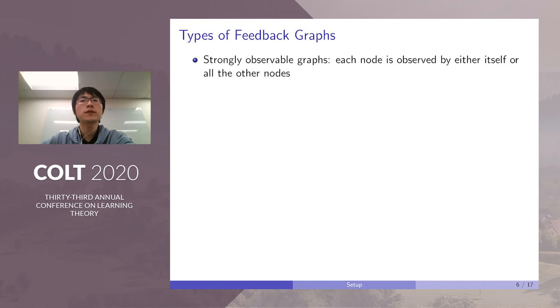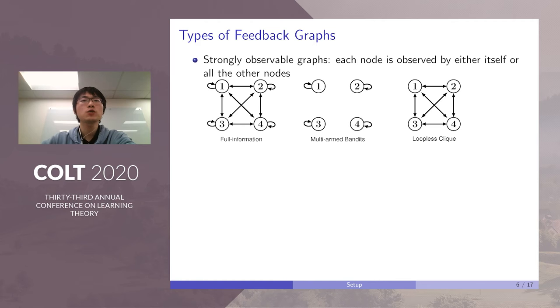Here we introduce different types of feedback graphs. Strongly observable graphs are the graphs each of whose node is observed by either itself or all the other nodes. Here are several examples. The first one is a clique, which recovers the classic full information expert problem, because every node can observe all the nodes. The second graph only contains self-loops, which is MAB, because every node can only observe its own loss, but not the others. The third one is called loopless clique, where each node can observe all the other nodes, but not itself.